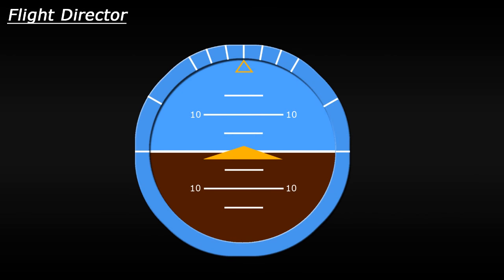Today we're going to be taking a quick look at the Flight Director feature in a cockpit and what it's used for. In this video we'll be talking a lot about the Attitude Indicator, so if you're not familiar with what it is and what it does, I'd recommend quickly checking out my tutorial on cockpit instruments linked in the top right corner and the description below.